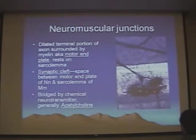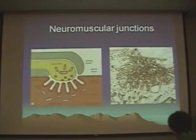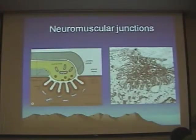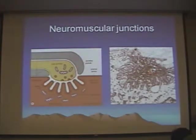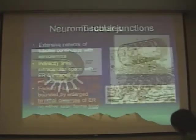That gap is bridged by neurotransmitter — a single fold in the peripheral motor system. Here's a nice EM of one of these motor end plates showing you these synaptic vesicles.